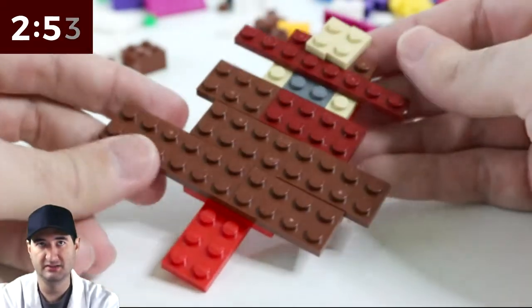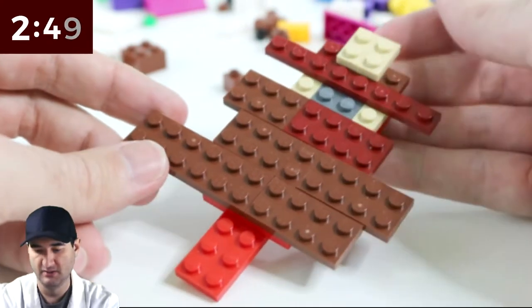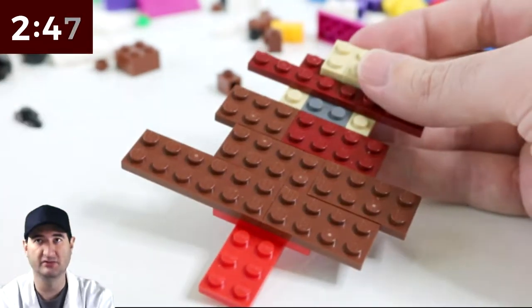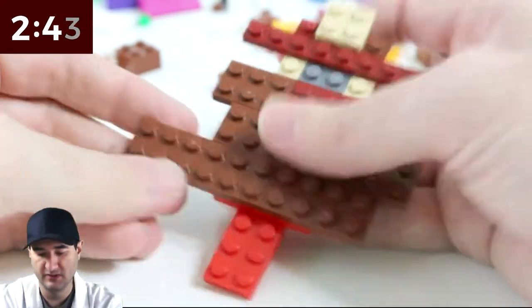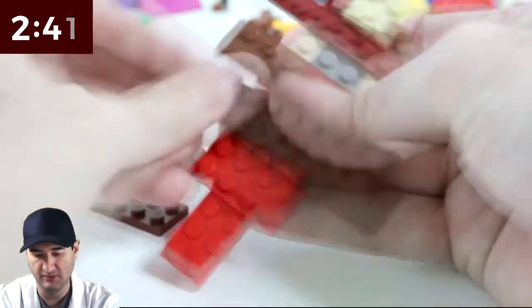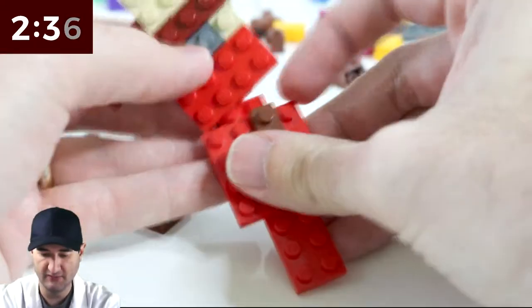And then something like this, and then maybe something like that where it kind of curls up on the tip. Well, that just looks like a bunch of nonsense. Maybe the non-symmetrical is not the way to go. We're two minutes in. I'm thinking we gotta redo everything now.